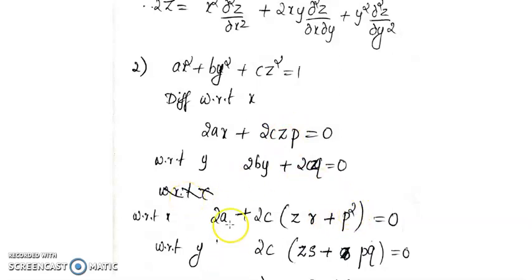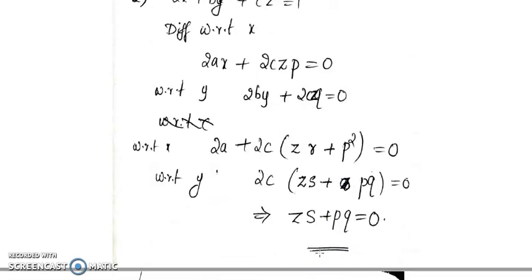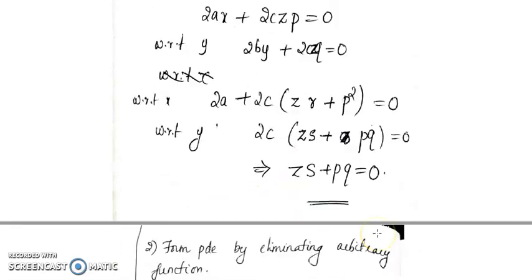Differentiating with respect to y gives 2c(zs + pq) = 0. Therefore, zs + pq = 0. So the required PDE is zs + pq = 0.